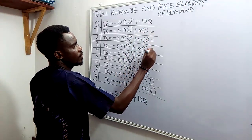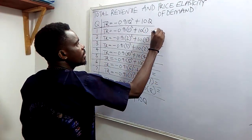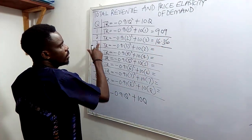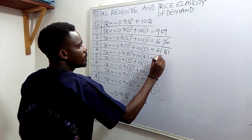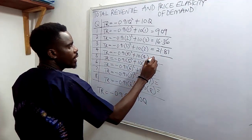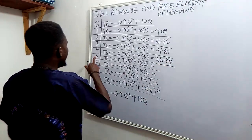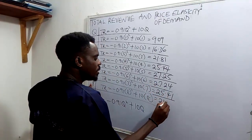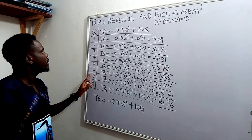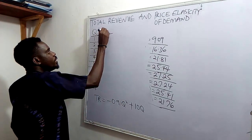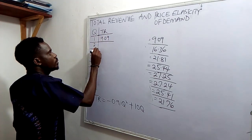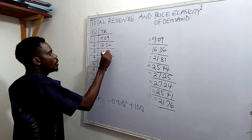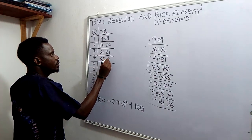For each of the values: when Q is 1, total revenue is 9.09. When Q is 2, total revenue is 16.36. When Q is 3, total revenue is 21.81. When Q is 4, total revenue is 25.44. When Q is 5, total revenue is 27.25. Therefore, we can summarize the relationship between quantity and total revenue as: TR at Q=1 is 9.09; Q=2 is 16.36; Q=3 is 21.81; Q=4 is 25.44.